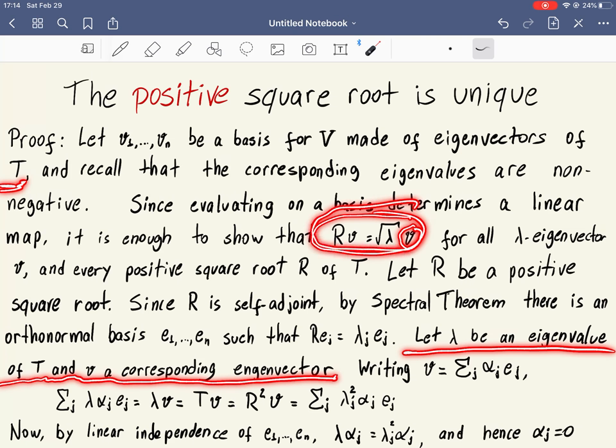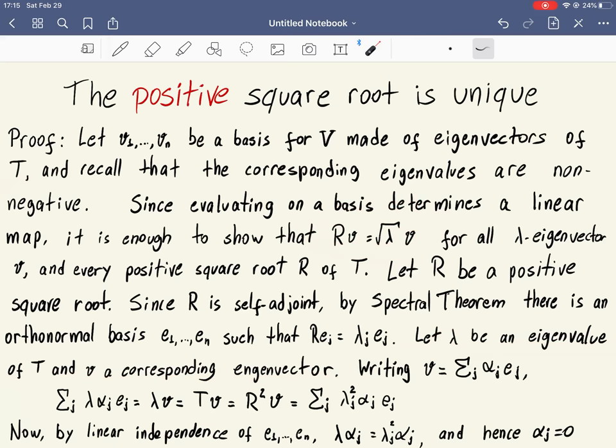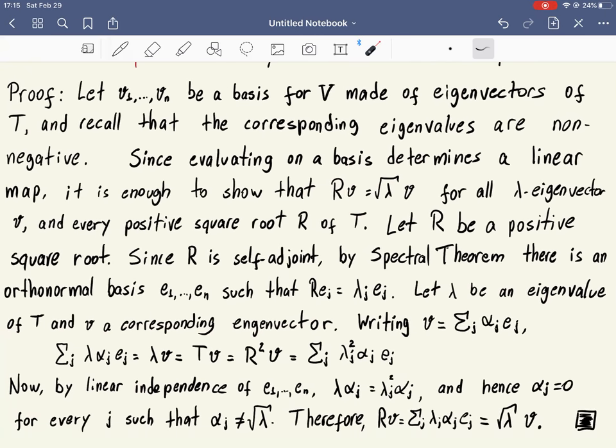And what we have to show is that R has no choice. R evaluated on V has no choice but to be square root of this number, which number, lambda, times V. How do we show that? We write V, since there is this orthonormal basis made of eigenvectors of R, so we can write V as a linear combination of this basis. And let alpha J denote the coefficients. And now we're going to use the only assumption we made. The assumption we made is that T equals R squared, because R is the square root of T.